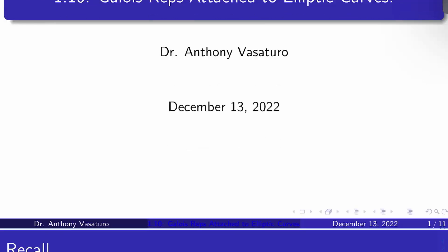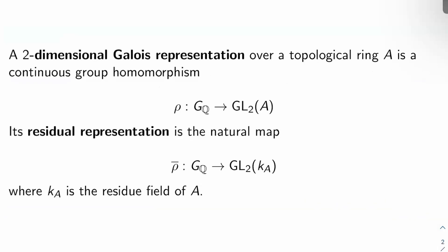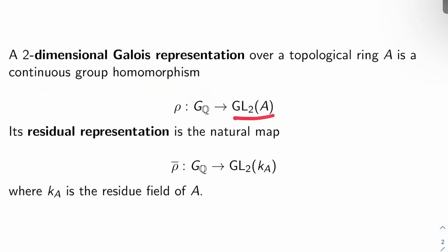Recall: what is a Galois representation? A two-dimensional Galois representation over a topological ring A is a continuous group homomorphism rho from the absolute Galois group of Q to GL2 of A. Its residual representation is the natural map rho-bar from that absolute Galois group to GL2 of K_A, where K_A is the residue field of A, which is A mod its unique maximal ideal.